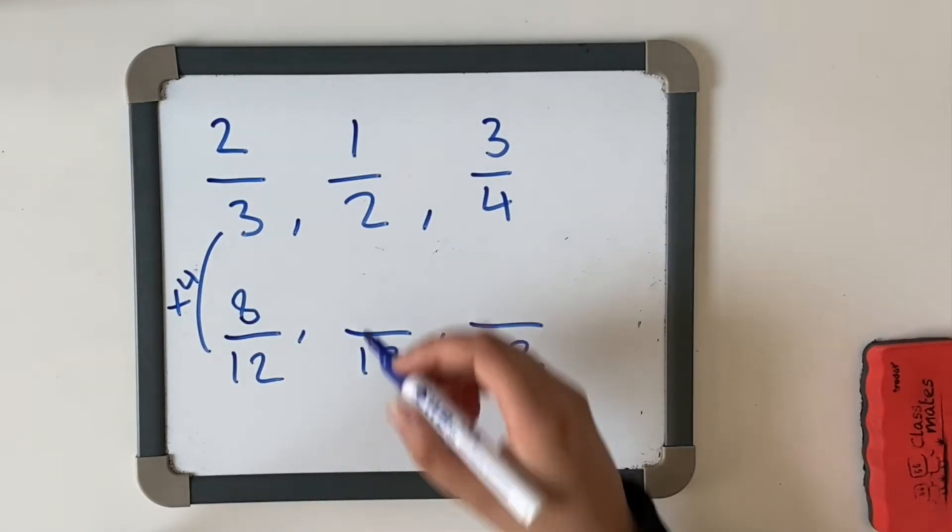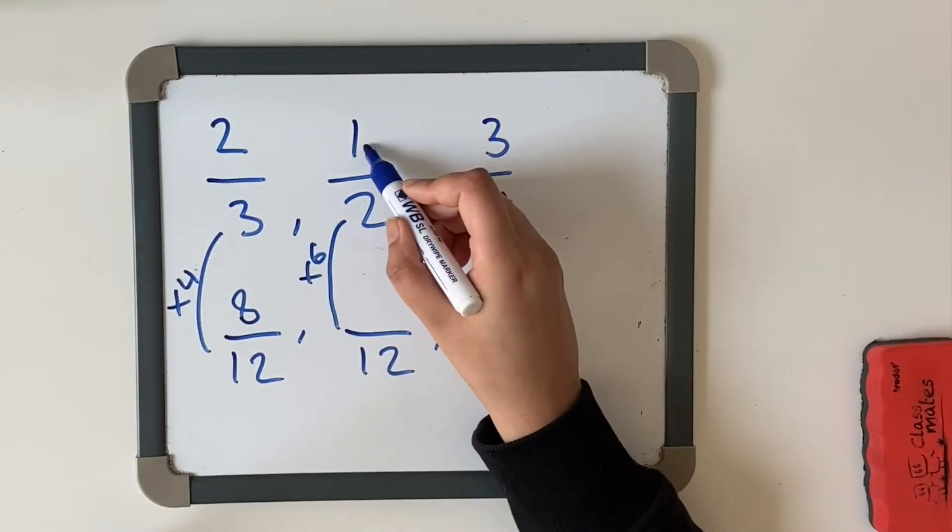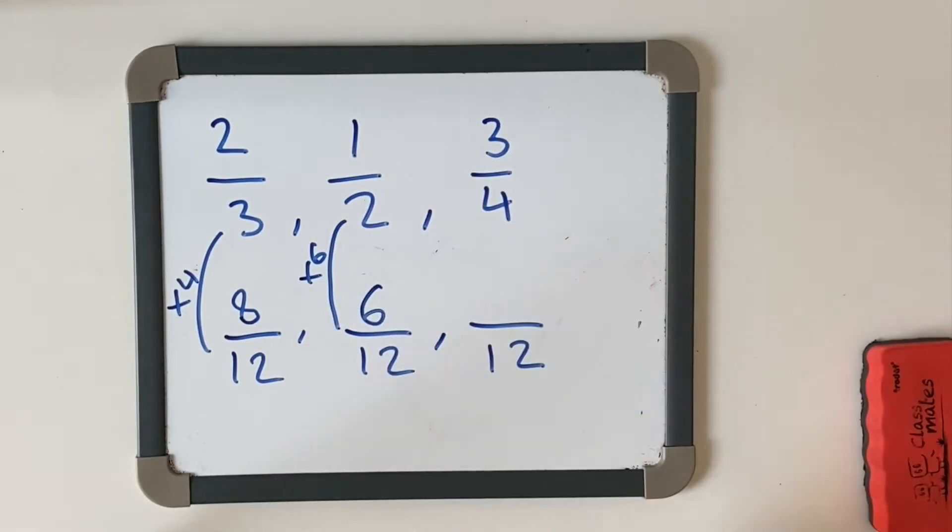And our second one, we're going to look at how many twos go into 12. Two, four, six, eight, 10, 12. So we're going to multiply that by six. One times six equals six.